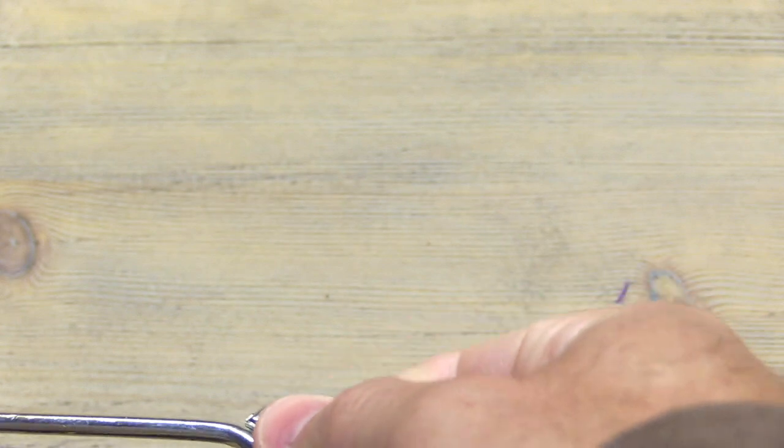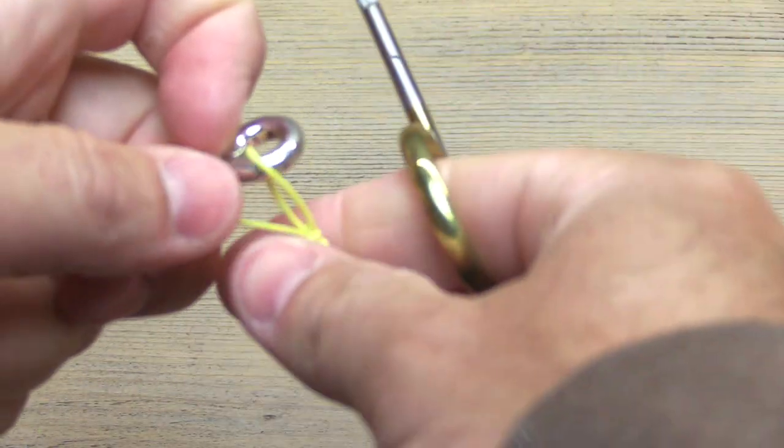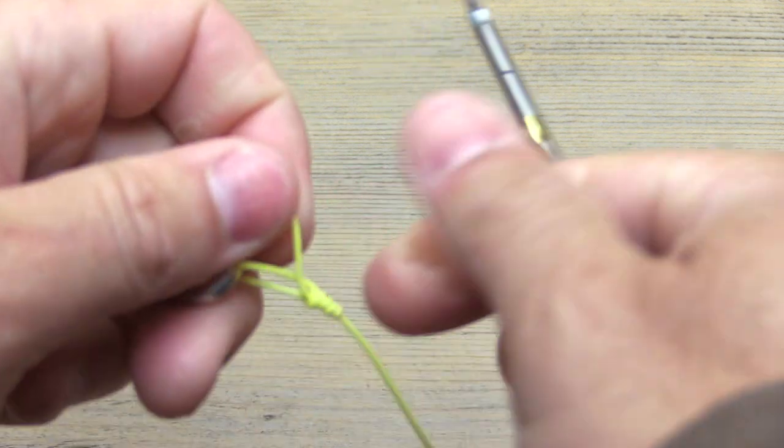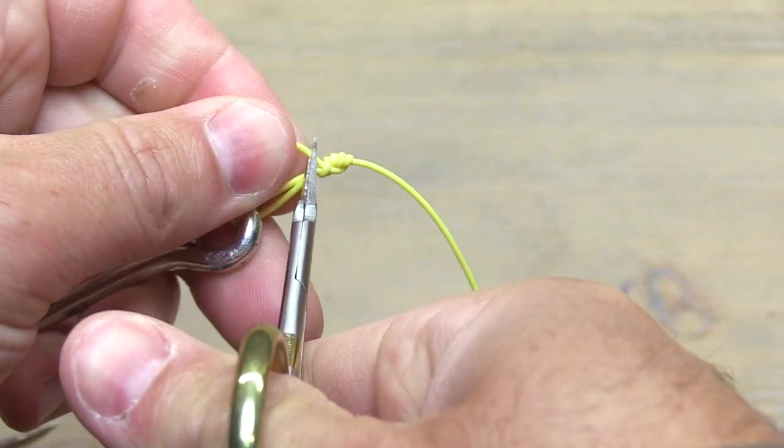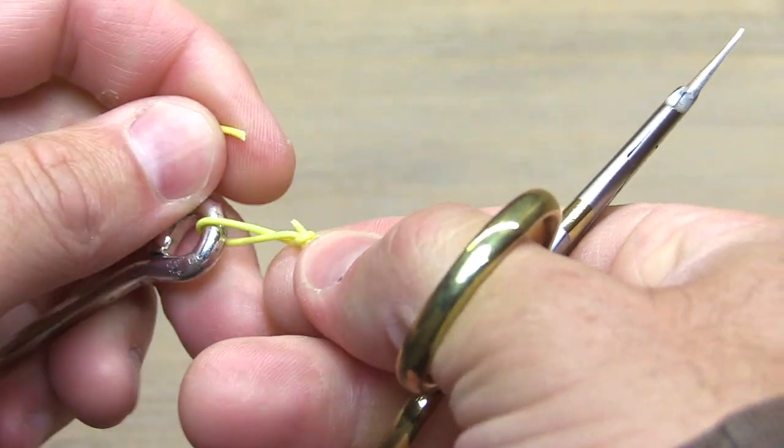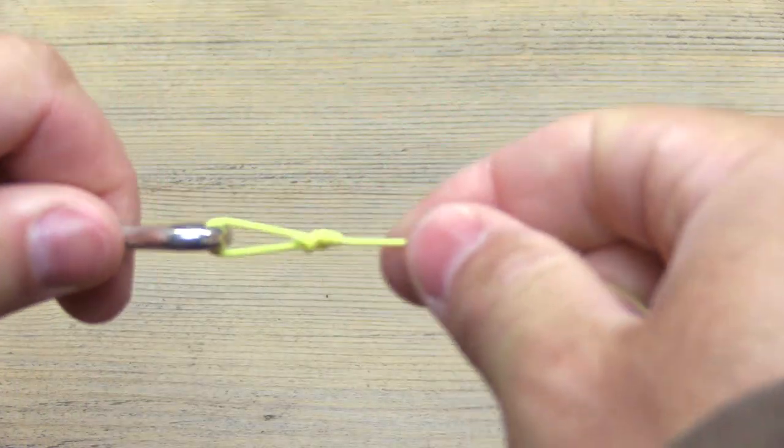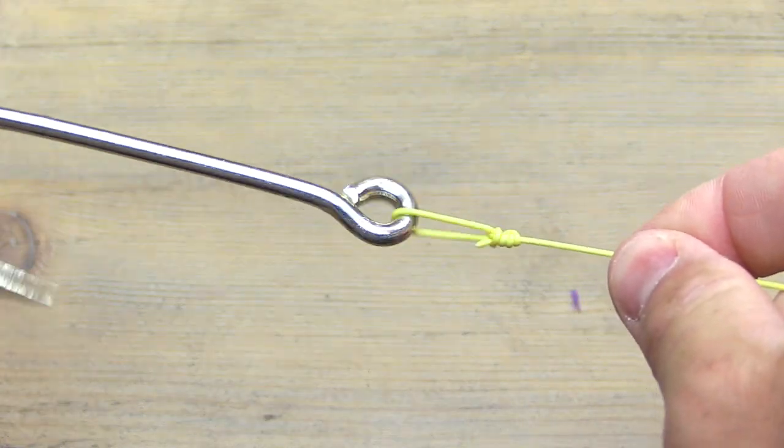Now when you trim your tag end I still trim mine pretty close to flush. I left it a little longer on that streamer at the beginning of the video just so you guys could see it, but I usually trim it pretty close. I might leave a tiny little nub just in case you get a little slippage, but that is the finished Cray Loop.